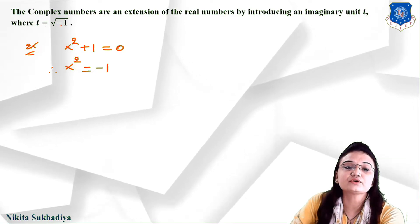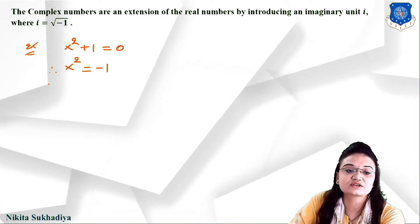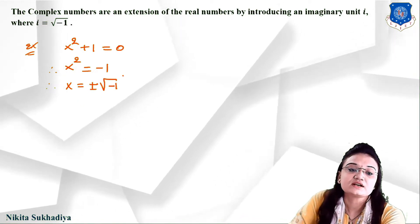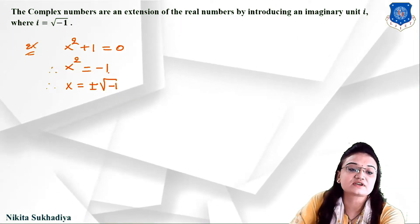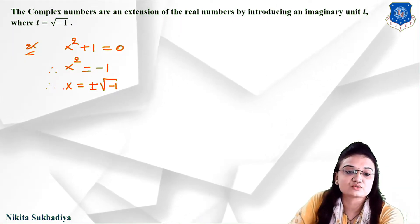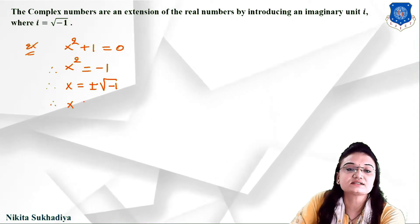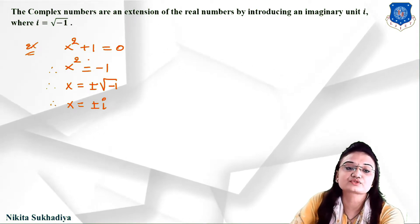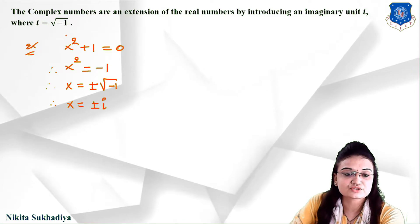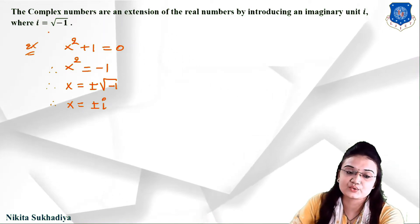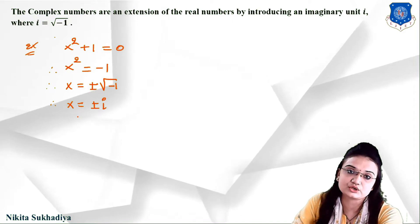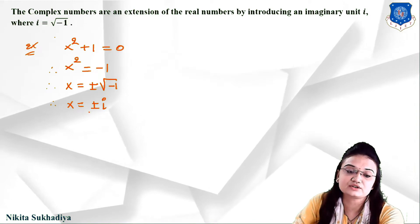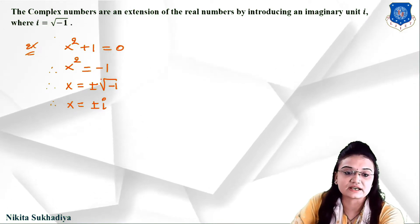By defining the square root of minus 1 as i, we get x equals plus or minus the square root of minus 1, which gives x equals plus or minus i. So by introducing the imaginary unit i, we can easily find the solution for the square root of any negative number. This is the main reason for introducing the imaginary unit i.